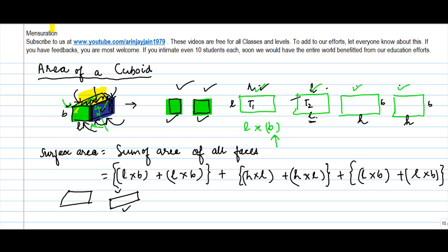This becomes H into B, or you can write this as 2LB plus 2HL plus 2LB, or 2 times LB plus HL plus HB.